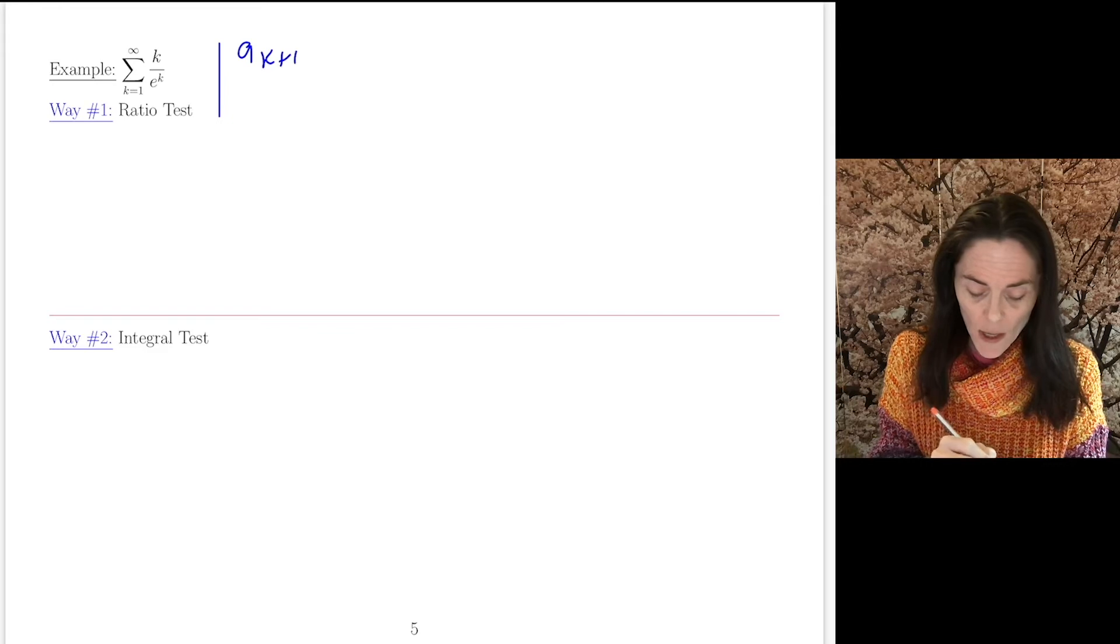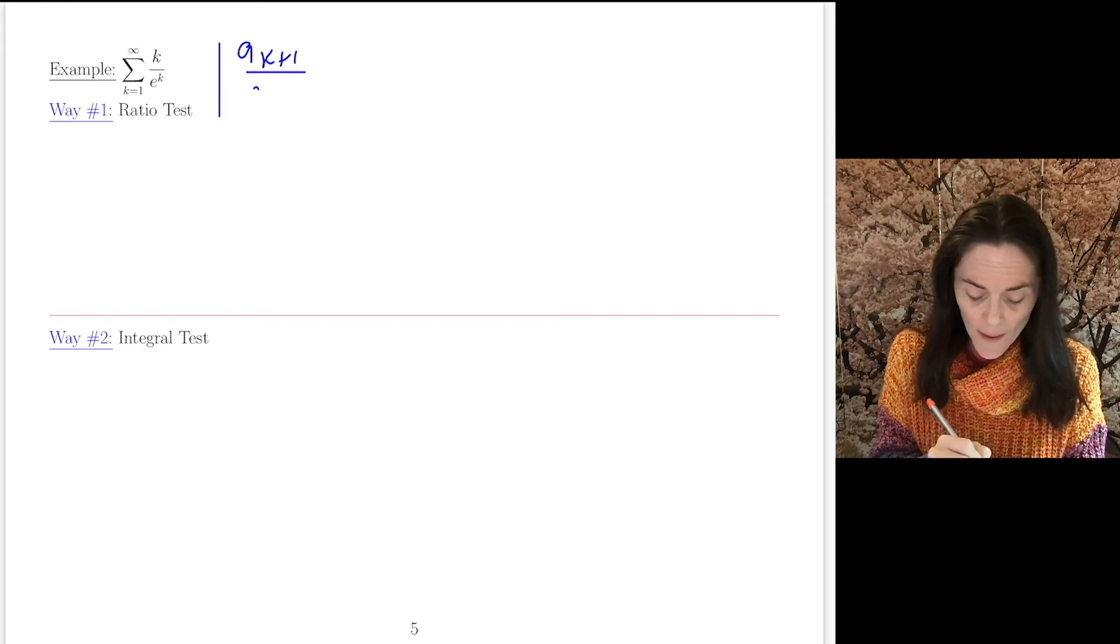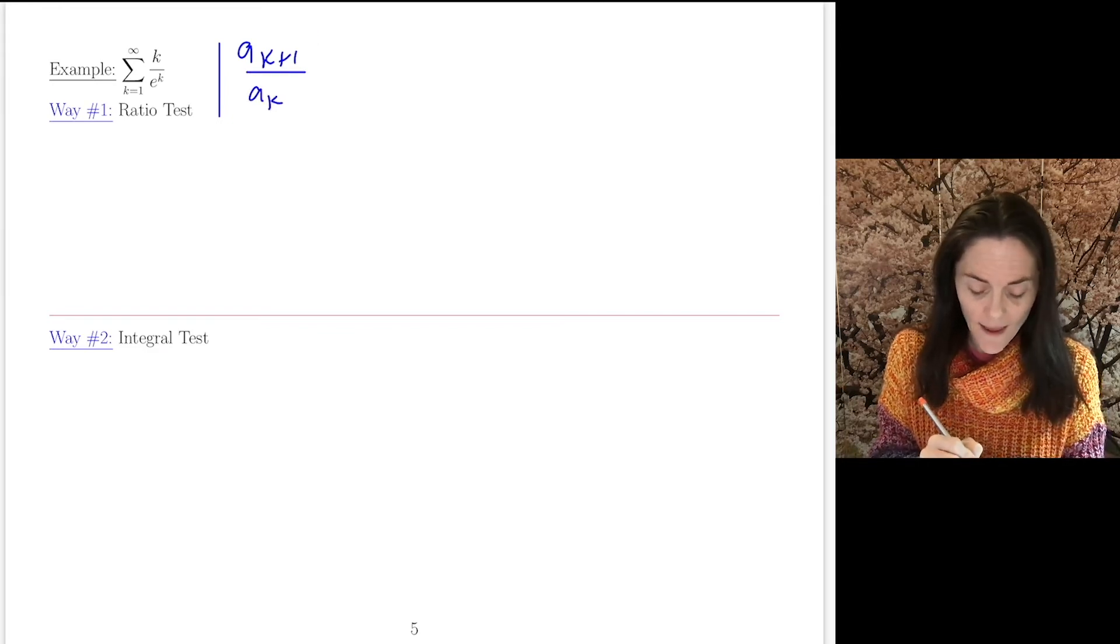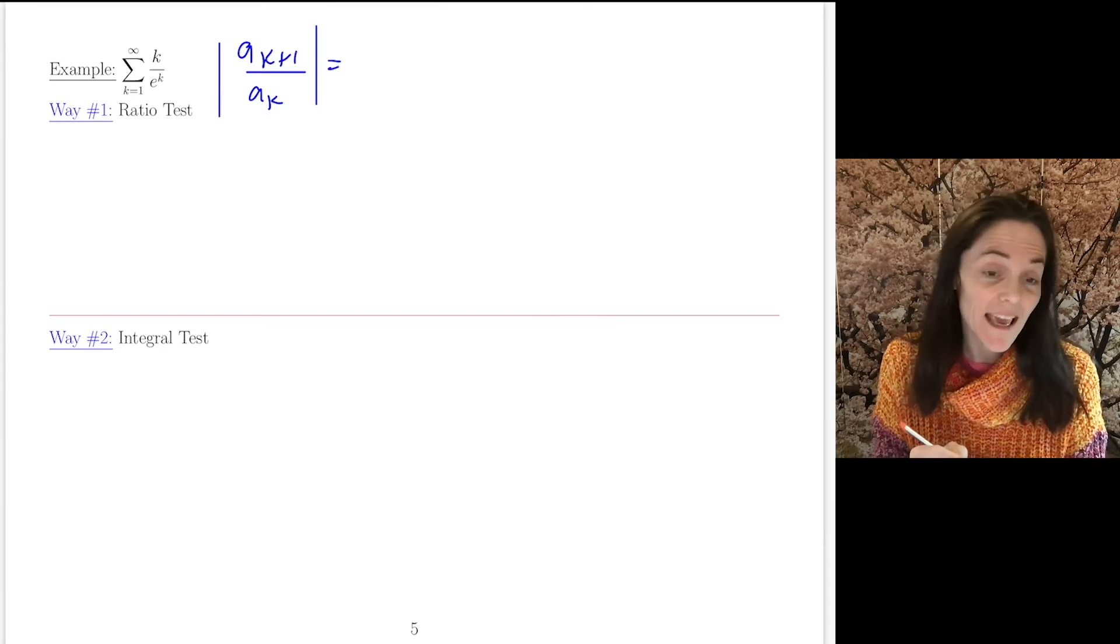So let's do ratio test first, as one of the techniques. We look at absolute value, a_k+1 over a_k, and we simplify. In this case, the series is non-negative. I don't really need the absolute values.